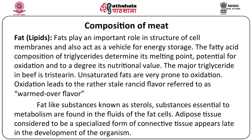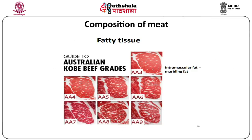The extracellular proteins collagen and gelatin, which are abundant in the connective tissue, are another part of the protein content. Fat plays an important role in the structure of cell membranes and also acts as a vehicle for energy storage. The fatty acid composition of triglycerides present in meat determines its melting point, potential for oxidation and to a large degree its nutritional value. The major triglyceride in beef is tristearin. Unsaturated fats in meat are very prone to oxidation, and when the fat gets oxidized it leads to a stale rancid flavor referred to as the warmed-over flavor. Fat-like substances known as sterols — including cholesterol, which is essential to metabolism — are found in the fluids of the fat cells. Adipose tissue is considered a specialized form of connective tissue which appears late in the development of the organism.